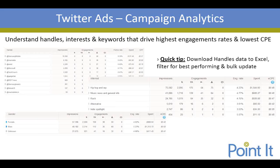A super quick tip: if you're looking to go after a list of handles, all this data is downloadable into Excel. You could download all the handles, filter for the best performers, grab all those, and do a bulk upload into your campaign — create a new campaign and just target those that are performing best. That's a very quick overview of campaign analytics and campaign reporting.